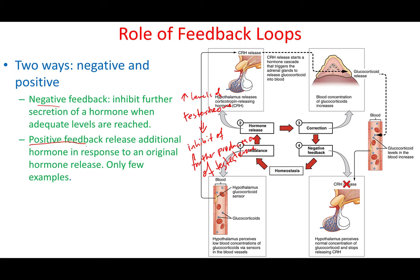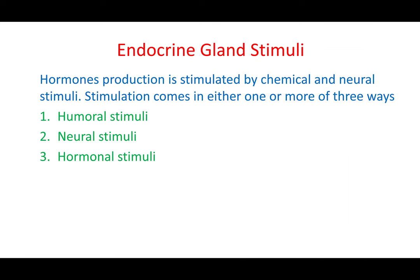The other type is positive feedback. The classic example is oxytocin, the hormone responsible for labor and childbirth. Higher levels of oxytocin lead to more oxytocin production, because it induces contractions, and those contractions lead to more oxytocin, which again leads to more contractions. So more of the hormone leads to additional production of that hormone.